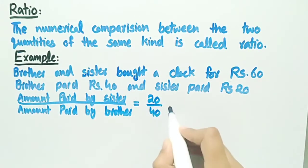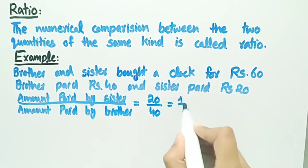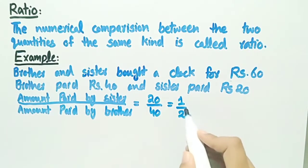After reducing this fraction, we can write it as 1 by 2. This fraction is showing that for every Rs. 1 of sister, brother paid Rs. 2.